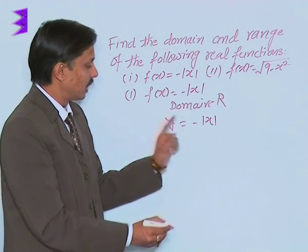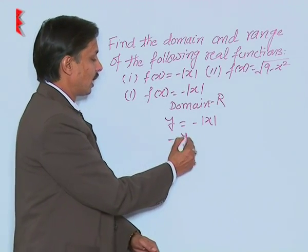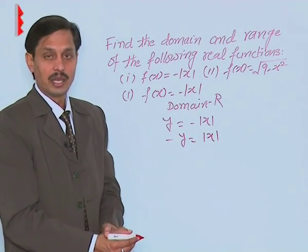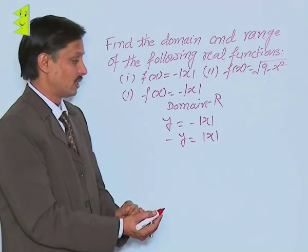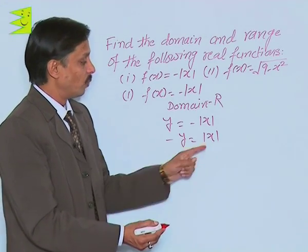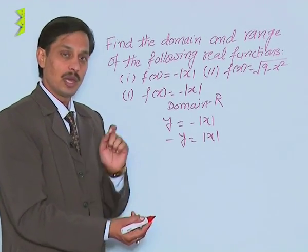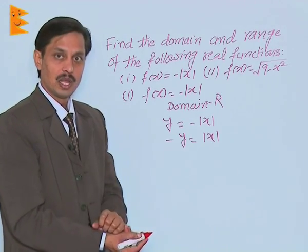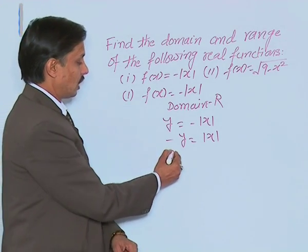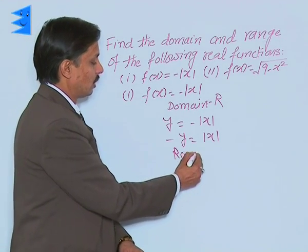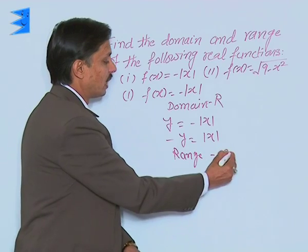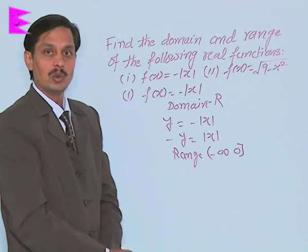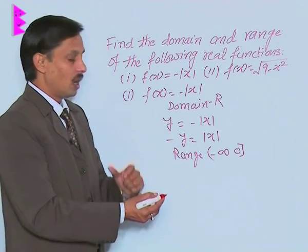If we transfer this negative here, we will get minus y equals mod x. If we are taking this value as minus, it means that we may take any value of x, the value of y will always be negative. It means that the range of this question will be from minus infinity to zero.